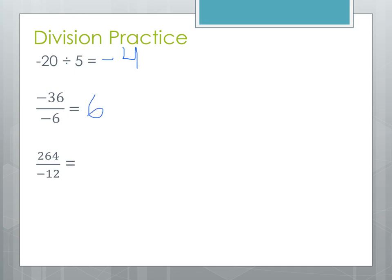Last example: 264 divided by negative 12. Signs are different — we have a positive and a negative — so we have a negative answer. We need to do some long division. Remember, the number listed first, or the top number in a fraction, goes inside the long division bracket. So 264 divided by 12.